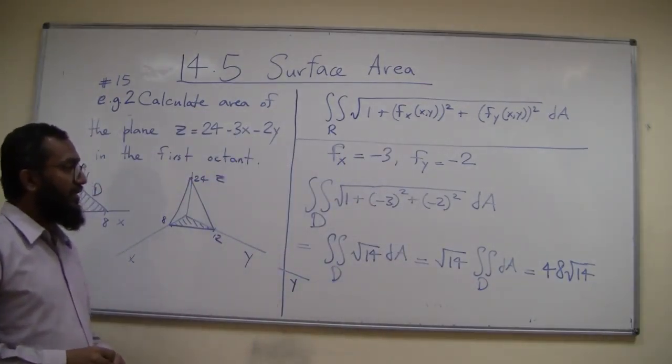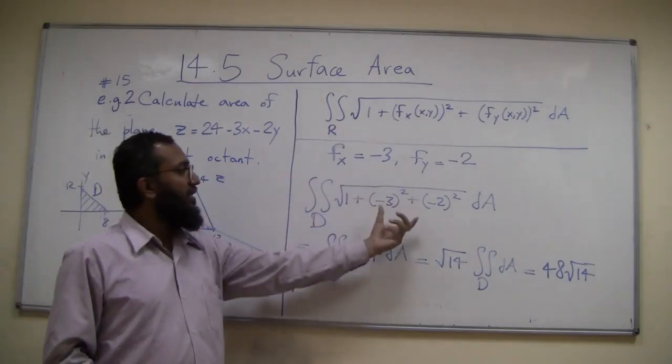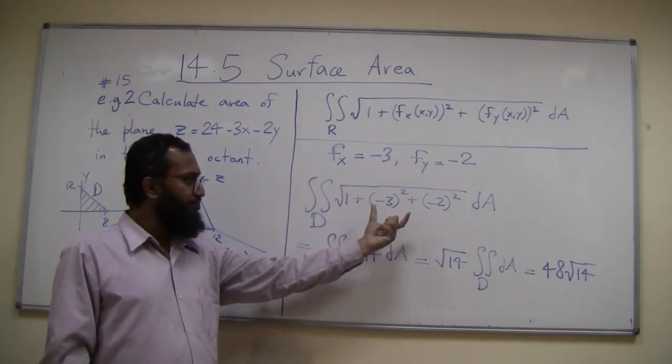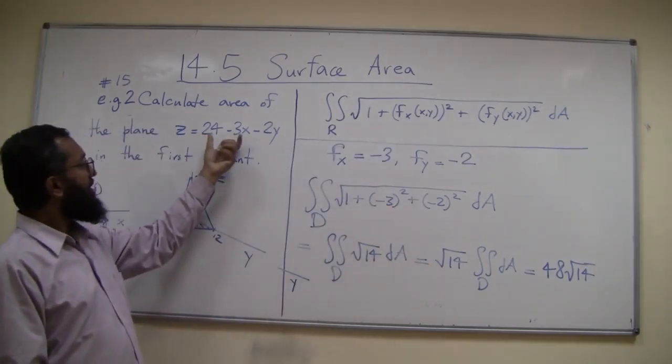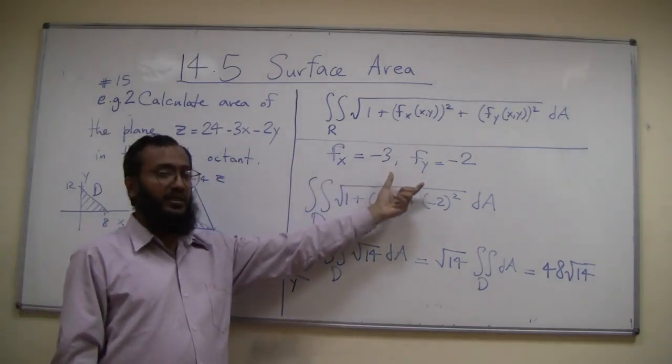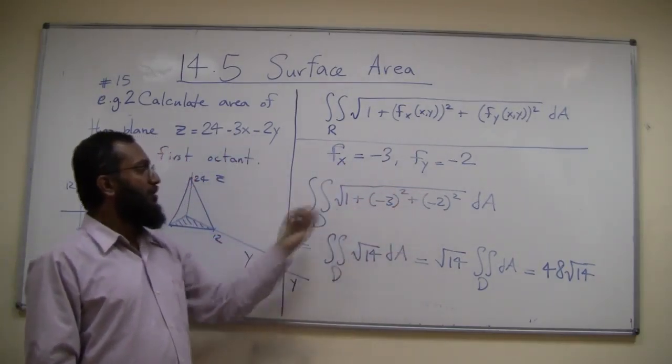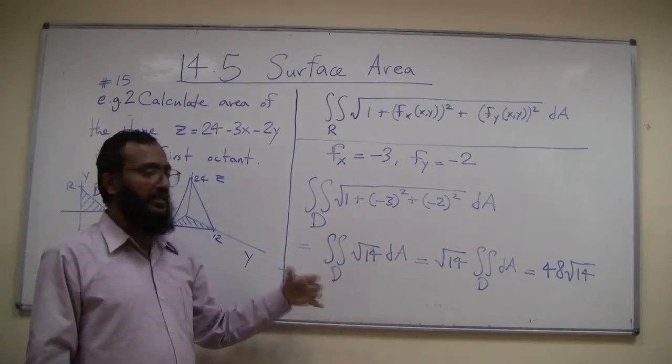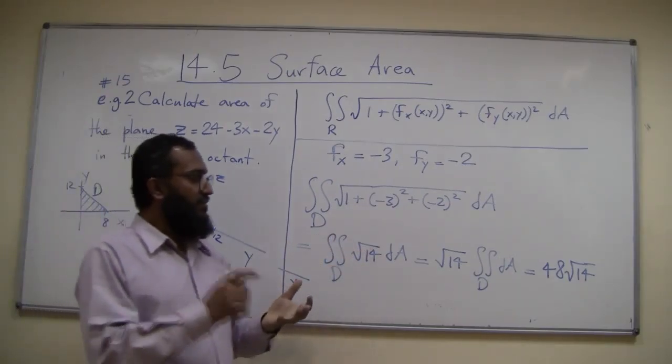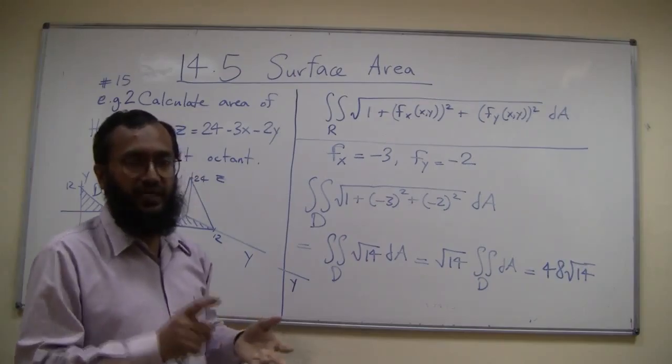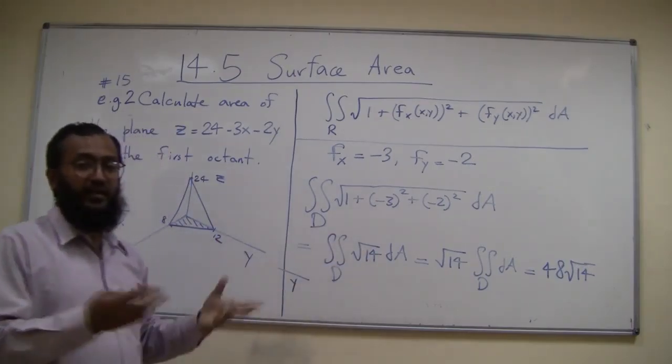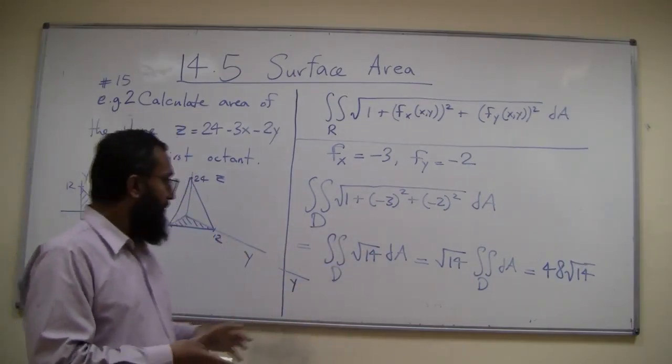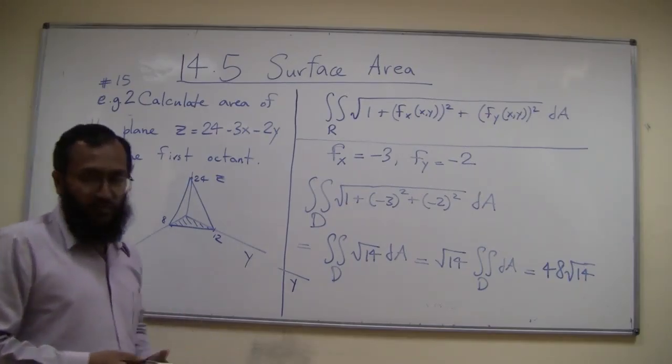These two examples were not hard. The integrals were not hard at all because this quantity luckily turned out to be a constant, constant because the functions were linear. The partial derivatives are numbers only, so these were constants. Pull out the constant, then you just calculate the area of the region. If the area is one of those nice triangles, circles, and rectangles, you know how to calculate without doing the integral. But this is not always going to be the case.